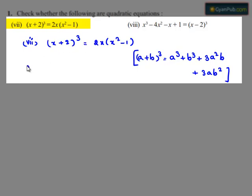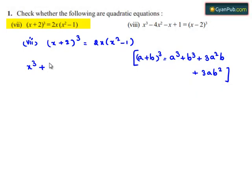So this becomes x cube plus 2 cube is 8 plus 3 times x square times 2 plus 3 times x times 2 square. This is equal to 2x times x square is 2x cube, 2x times minus 1 is minus 2x.